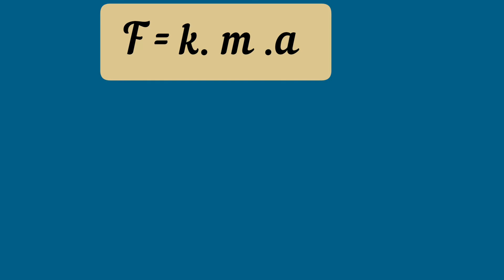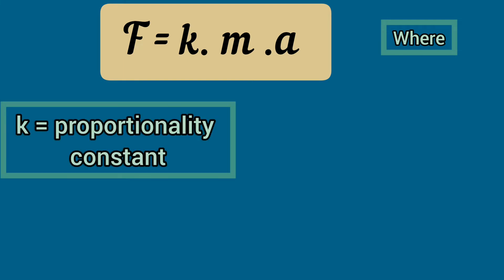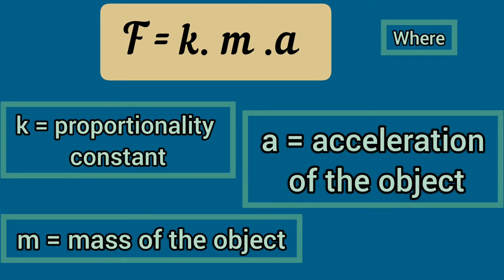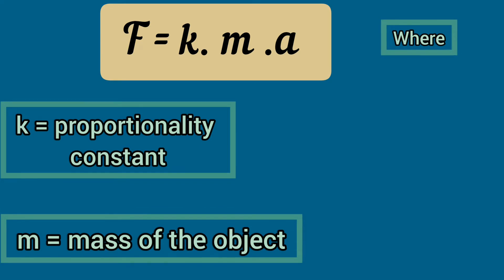This law can also be expressed in the form of another formula: F is equal to KMA, where K stands for proportionality constant, M stands for mass of the object, and A stands for acceleration of the object.